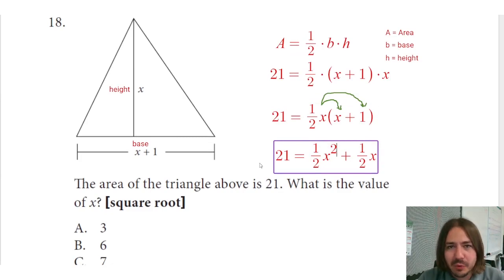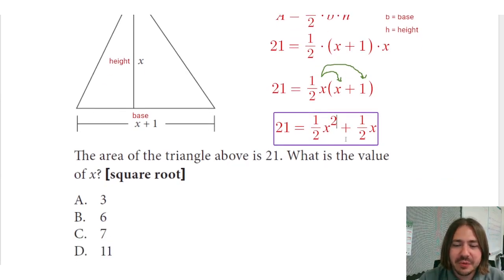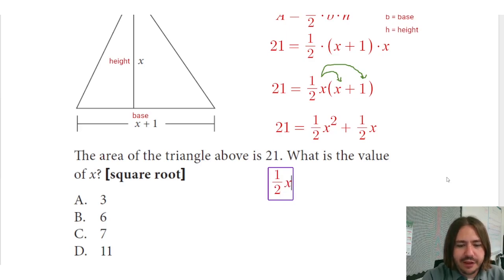In order to solve this, I do need it to be zero, so I'm going to subtract that 21 from both sides. That's going to leave me with 1/2 x squared plus 1/2 x minus 21 equals zero.